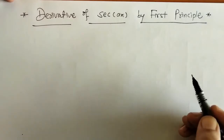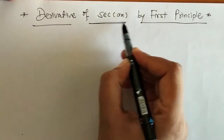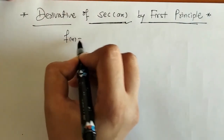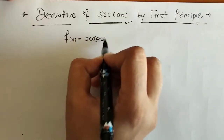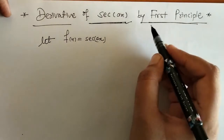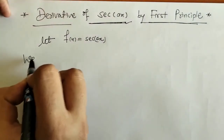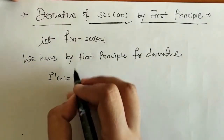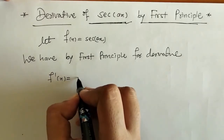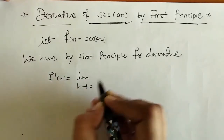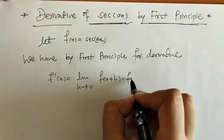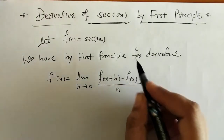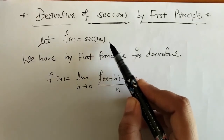Hello everyone, welcome to Unlock Maths. Today we have to find the derivative of sec(ax) by first principle. We consider f(x) = sec(ax), and we write down what first principle is: f'(x) = limit h tends to 0 of [f(x+h) - f(x)] / h. By using this first principle we have to find the derivative of sec(ax).